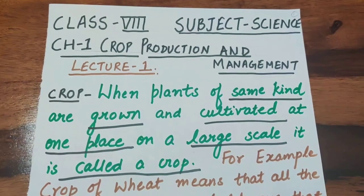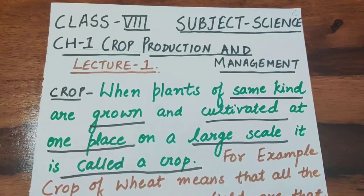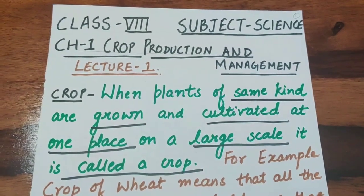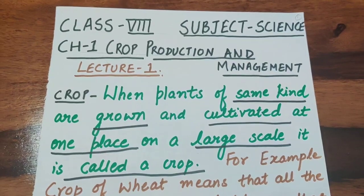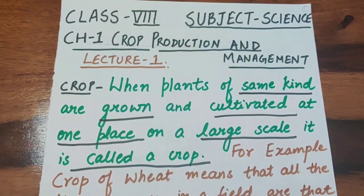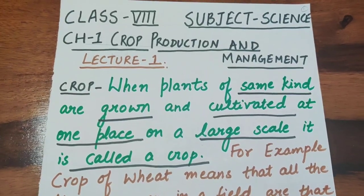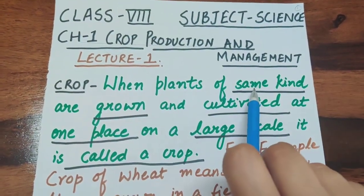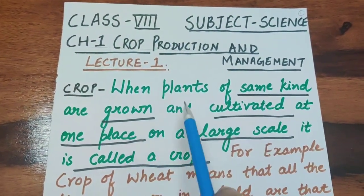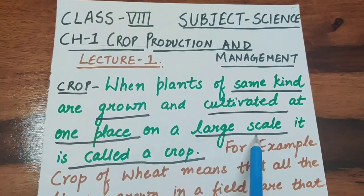Good morning everyone. We are going to discuss Chapter 1: Crop Production and Management of Class 8 Science. This is Lecture 1. We will start with the definition of crop. A crop is when plants of the same kind are grown and cultivated at one place on a large scale.